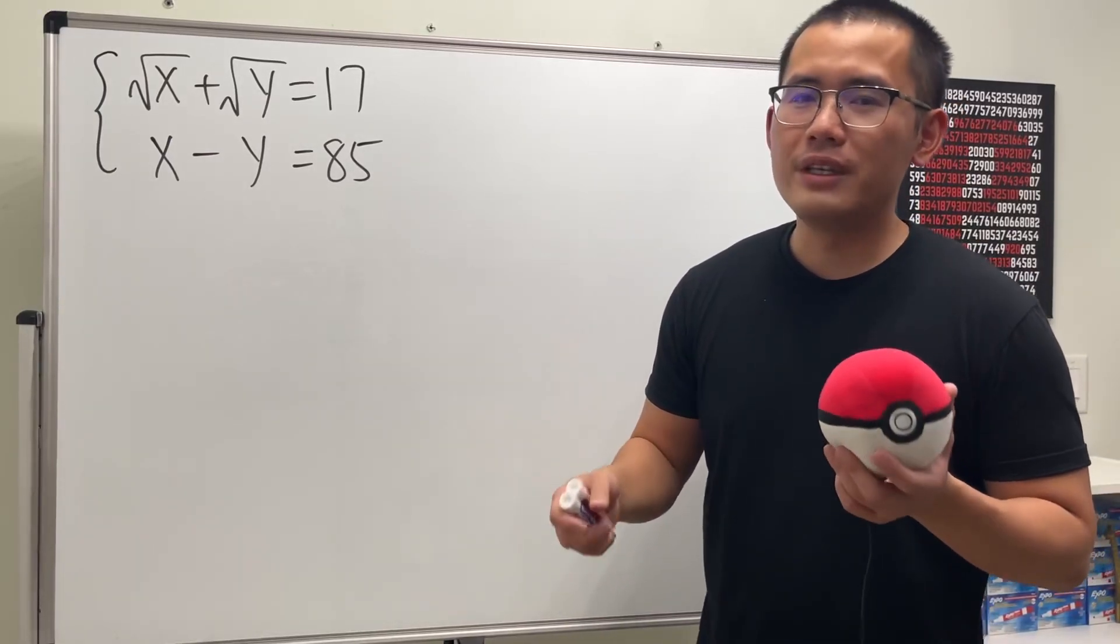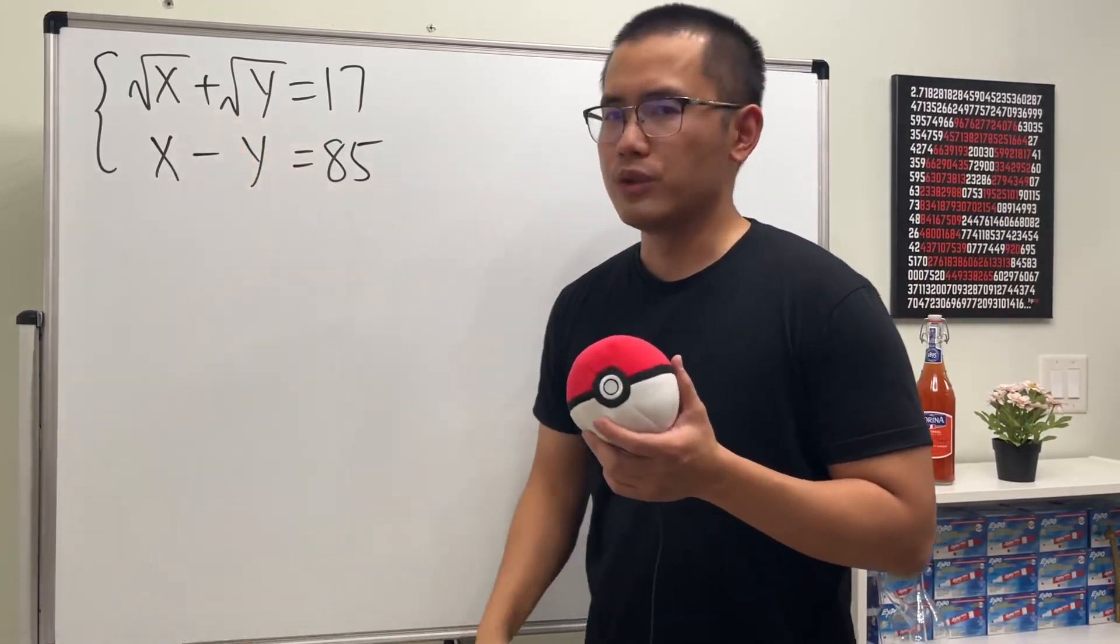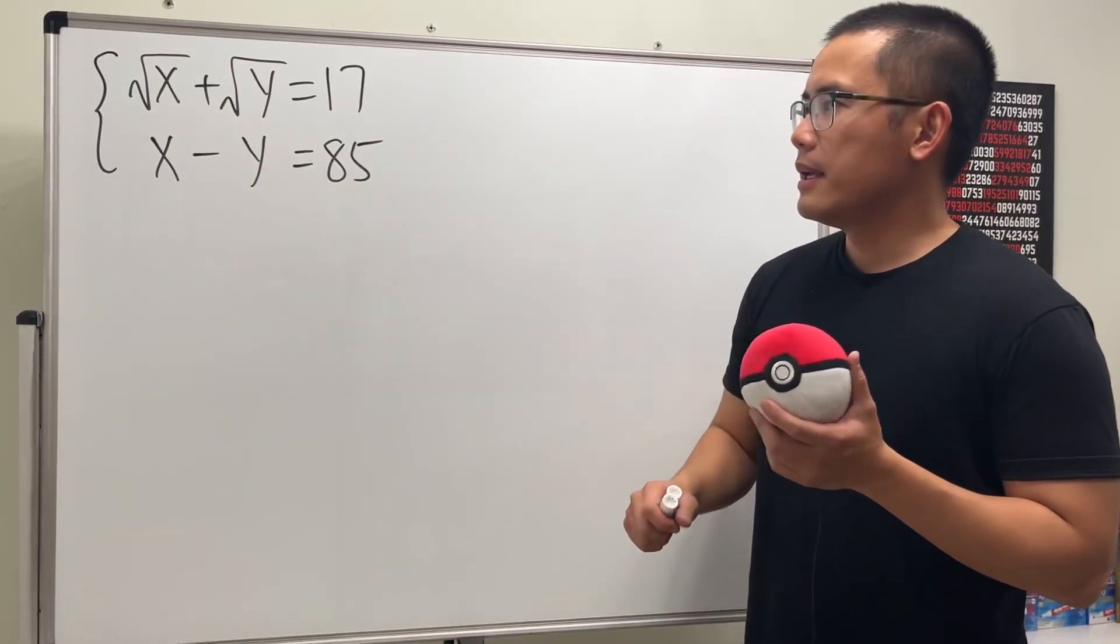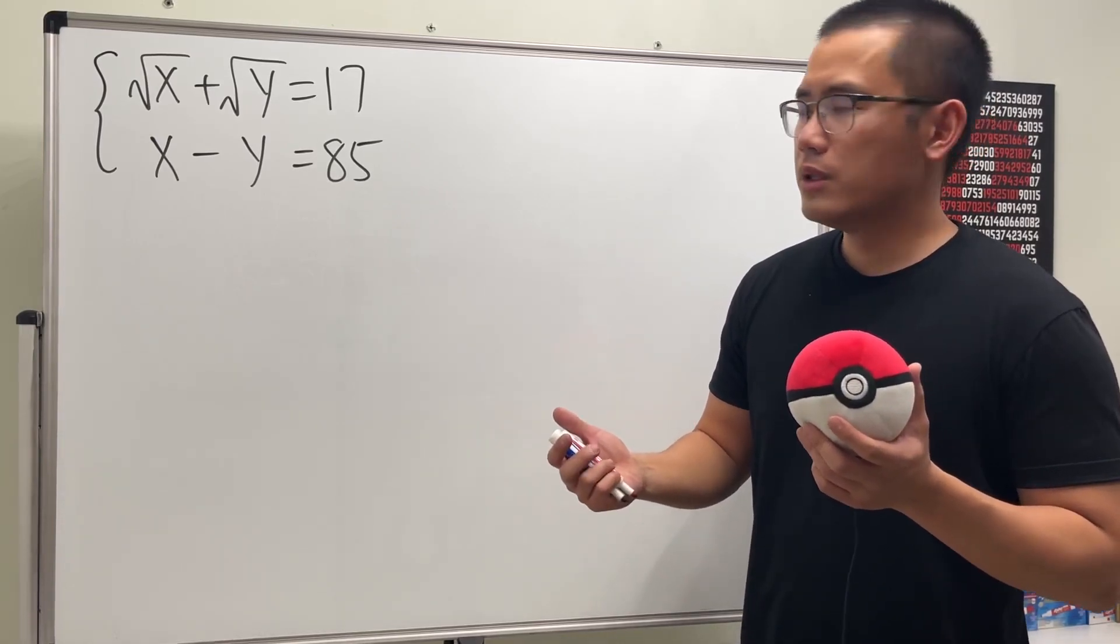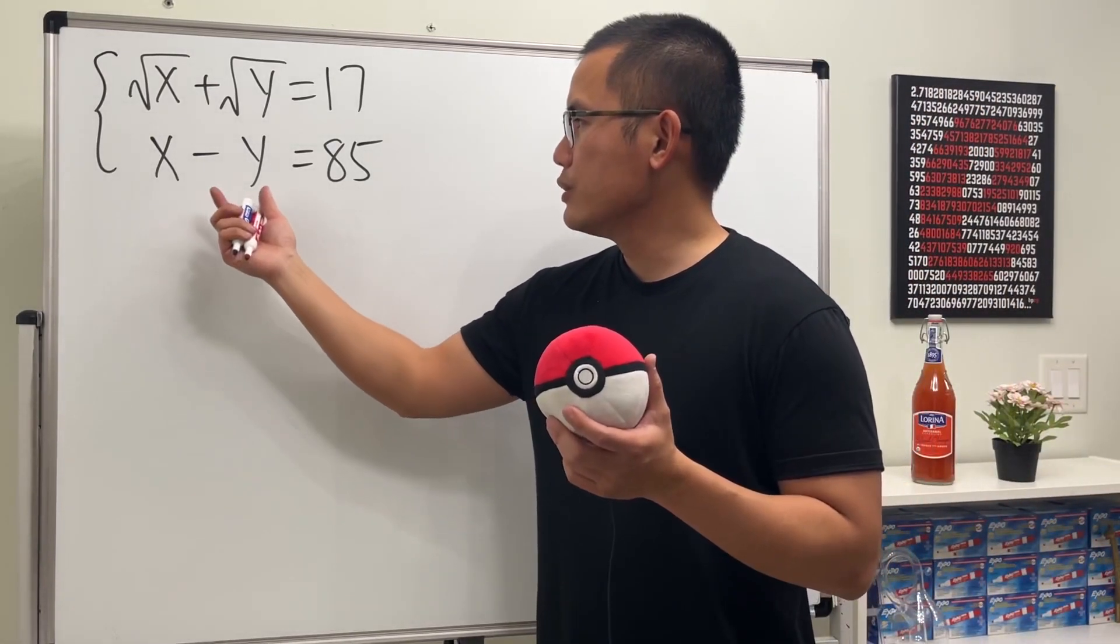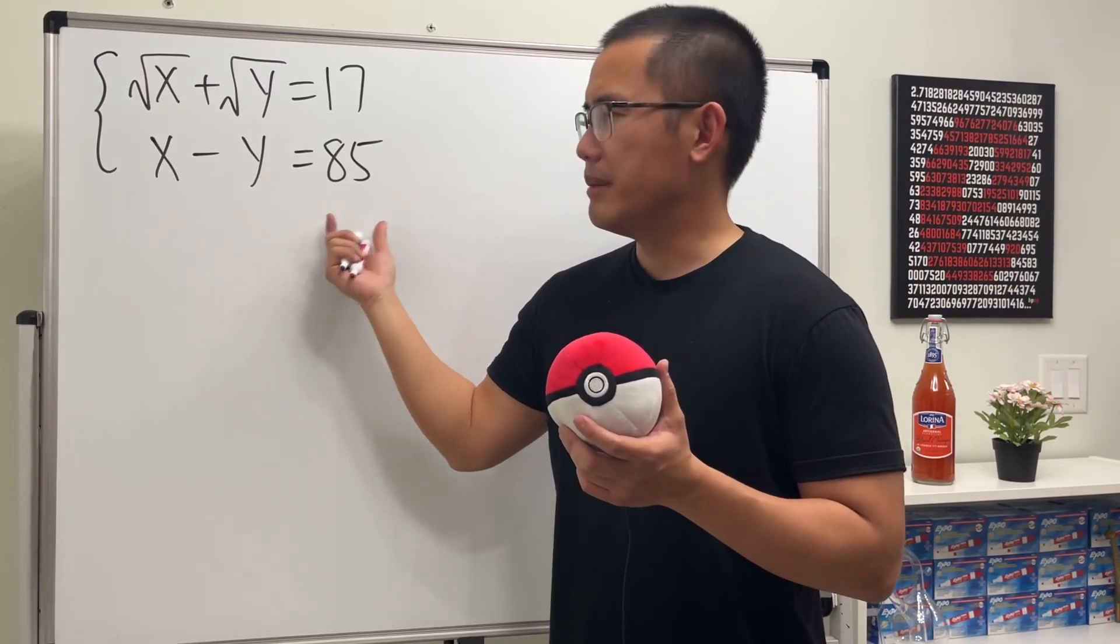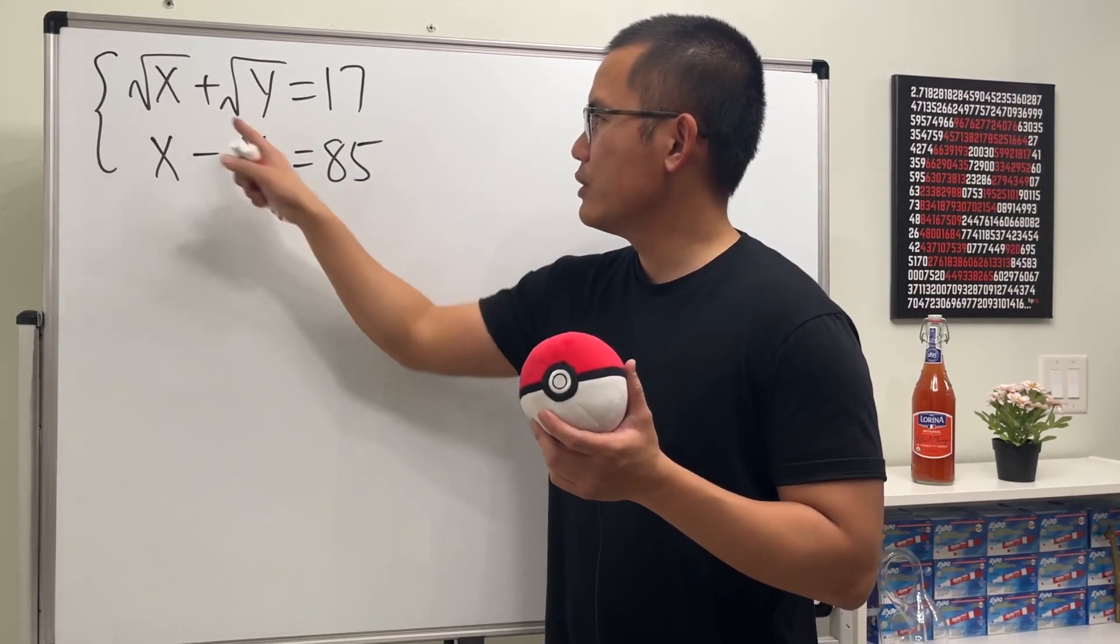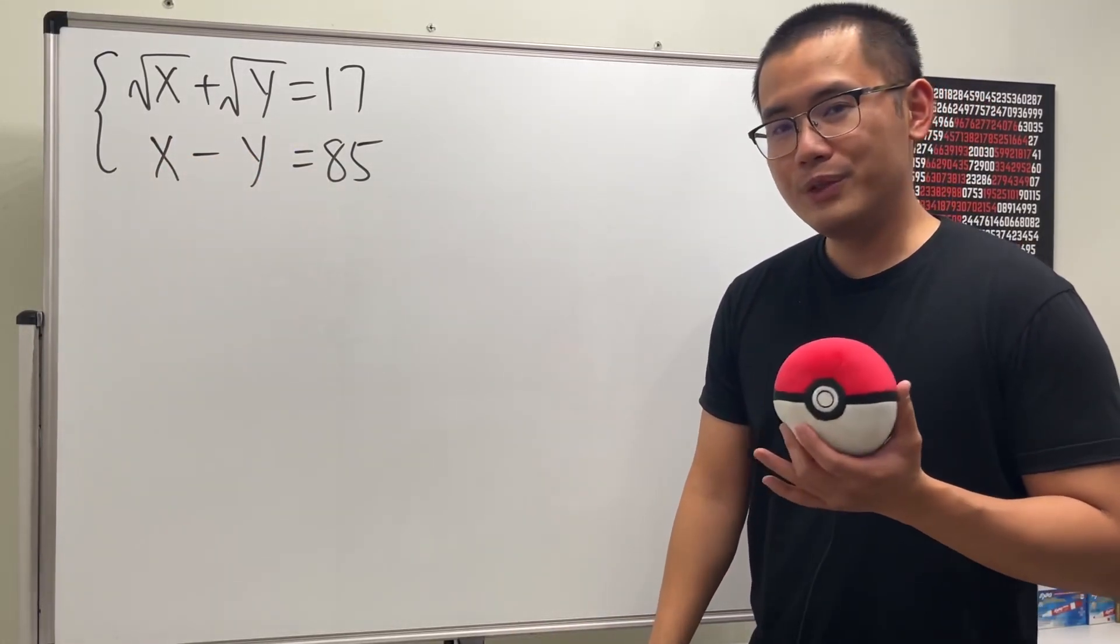This is an example of what we call a non-linear system of equations because we have the square root of x and also the square root of y. Do you think we should just use the usual approach, meaning maybe just do this by substitution? Maybe add y on both sides and then plug that expression to here and try to work that out. What do you guys think?